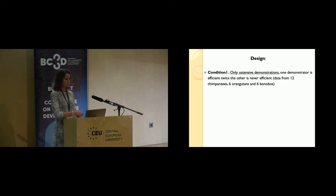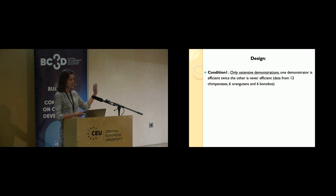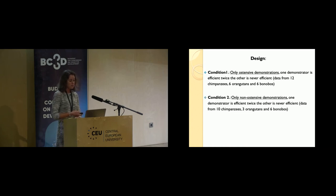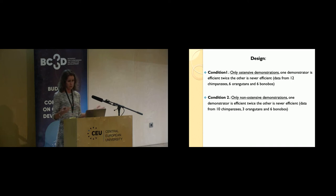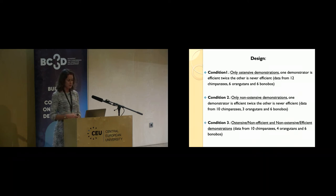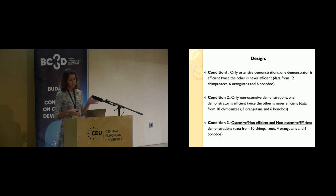We had three conditions. First, an only-ostensive condition where both demonstrators communicated with the apes while showing them how to operate the device, but differed in efficiency—one demonstrator succeeded twice, the other never. Second, an only-non-ostensive condition where neither demonstrator communicated. We included these two conditions to determine whether apes can detect efficiency, and how much communication would help or hinder efficiency detection. Finally, we had a critical condition pitting ostension against efficiency: the efficient demonstrator was not communicating, while the inefficient demonstrator was communicating with the apes.